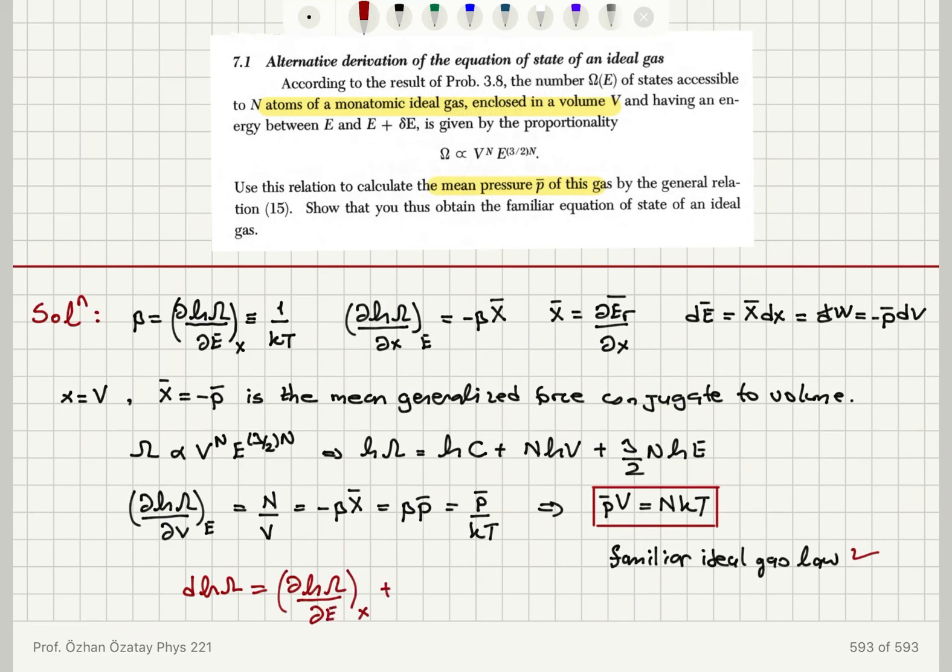we are looking at d ln omega and we write d ln omega as del ln omega del E at constant external parameters times dE